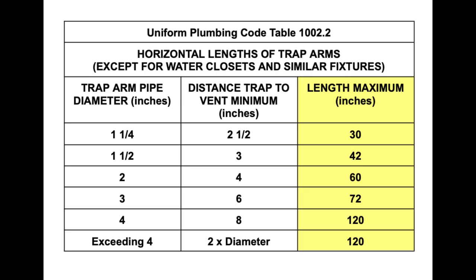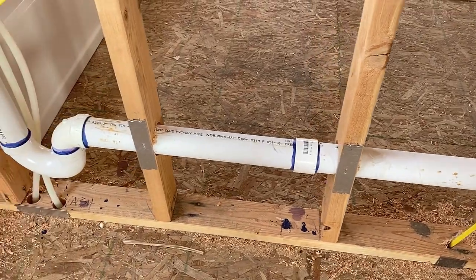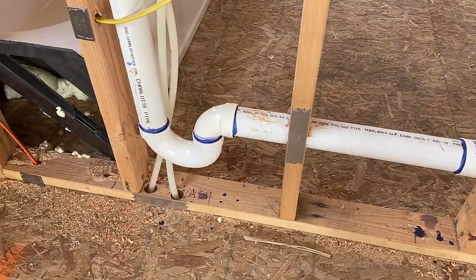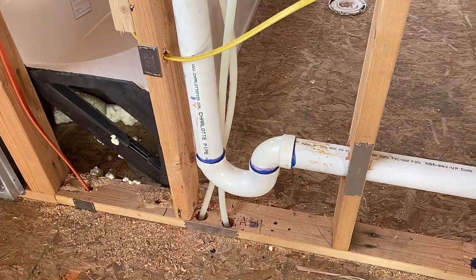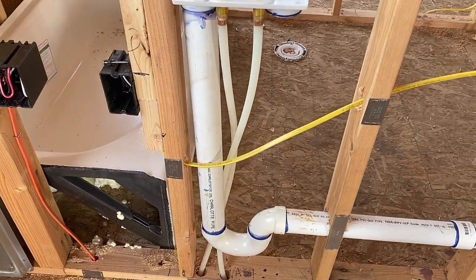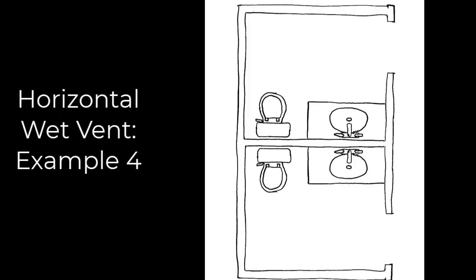Under the UPC: 1¼-inch pipe is only 30 inches maximum; 1½-inch is 42 inches; two-inch pipe is 60 inches maximum; three-inch pipe is 72 inches maximum; and four-inch pipe is 120 inches maximum. You'll find the Uniform Plumbing Code is more restrictive on trap arm distance than the IPC. Be sure you are conforming to whichever code is within your local jurisdiction.